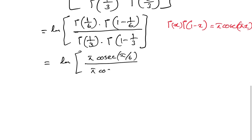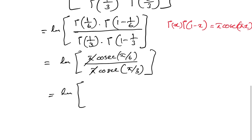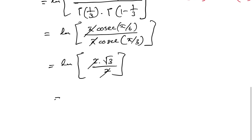We know sin(π/3) = (√3)/2 and sin(π/6) = 1/2. The 2's cancel, and we are left with ln(√3) = (1/2)ln(3). So the final answer is (1/2) ln(3). If you like this type of video, please subscribe to the channel. Thank you for watching.